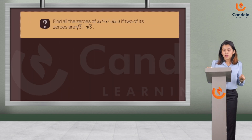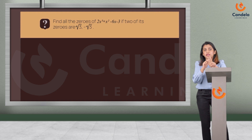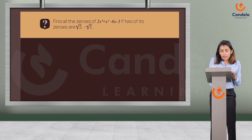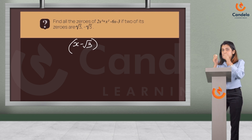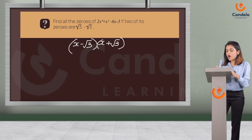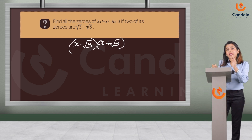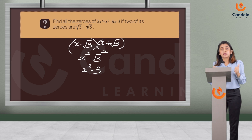With this theorem, we'll be doing one problem: find all the zeros of 2x³ + x² − 6x − 3, if two of its zeros are √3 and −√3. If √3 is a zero, then (x − √3) is one factor, and if −√3 is another zero, then (x + √3) is another factor. Using (a + b)(a − b) = a² − b², these two factors multiply to give x² − 3.